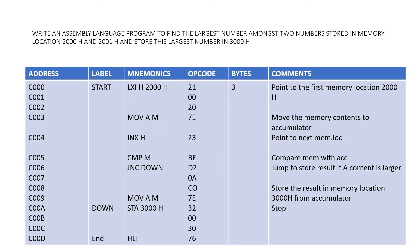Now let's see how to write programs for your practicals. In practicals, you write all columns: address column, label column, mnemonics column, op-code, number of bytes, and comments. First write the mnemonics, and along with mnemonics the label also comes — because from where we are jumping to what location, we don't know the address, so we write the label. After writing the mnemonics, write the number of bytes. For example, LXI H 2000 — if I start putting its opcode at C000, how many consecutive memory locations does it need? It needs three, so LXI H 2000 occupies C000, C001, and C002, and the next instruction starts at C003.